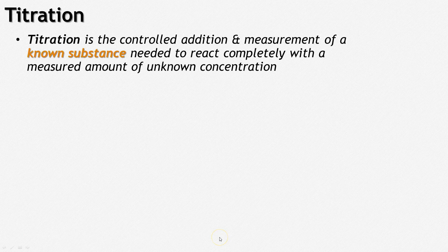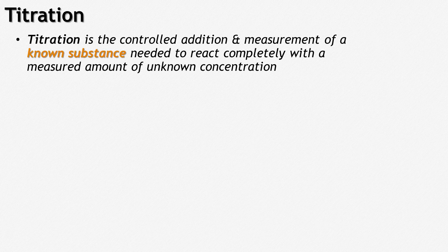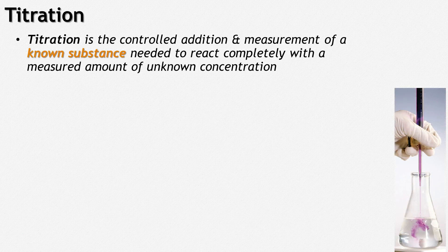Titration is how we figure out the exact concentration of an unknown substance. It's controlling how much you add of a known substance to completely neutralize or react with an unknown substance. You have a known concentration and you know how much you're adding, and titration allows you to figure out what that unknown concentration actually is. You use a burette to deliver a certain volume of solution and watch for the indicator to change.